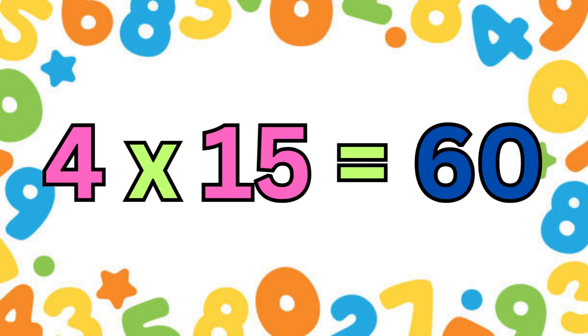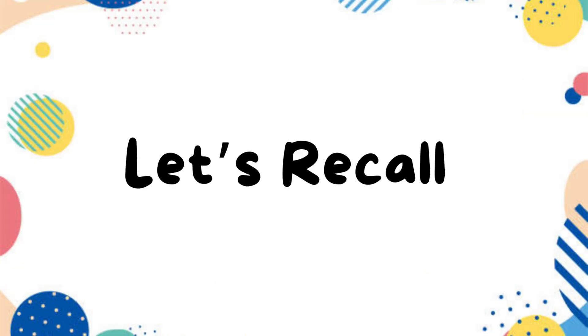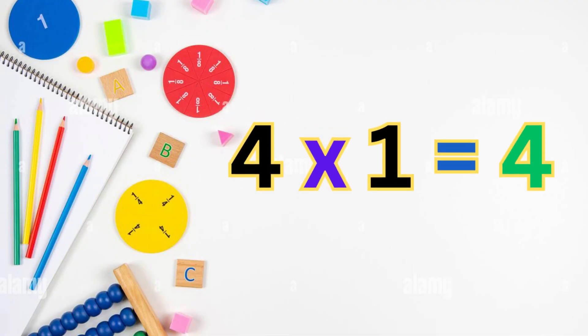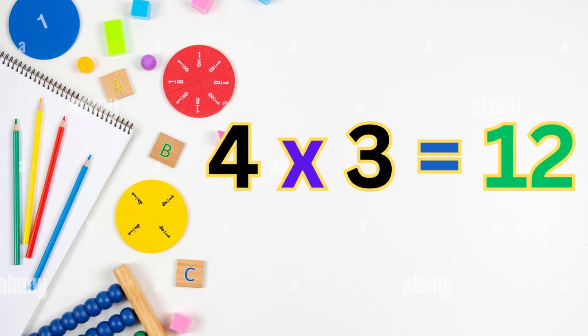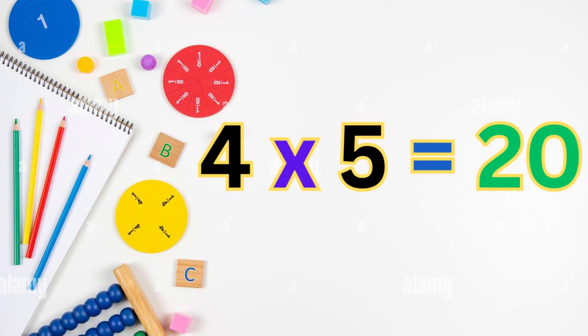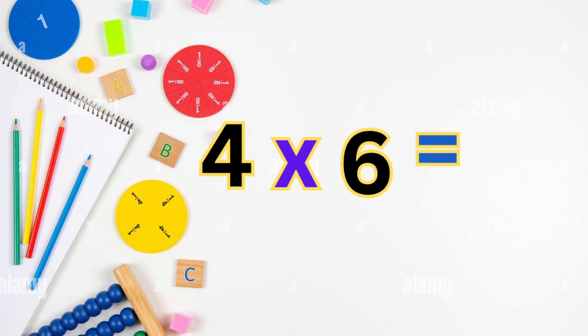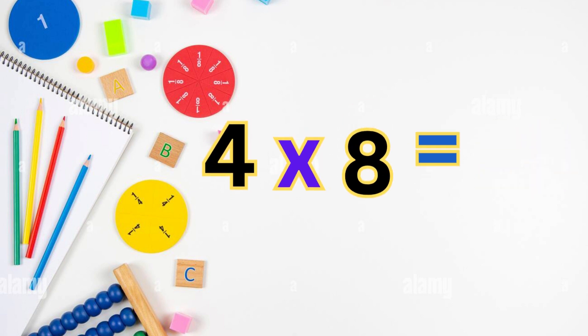Four fifteens are sixty. Now let's recall tables of four: four ones are four, four twos are eight, four threes are twelve, four fours are sixteen, four fives are twenty, four sixes are twenty-four, four sevens are twenty-eight.